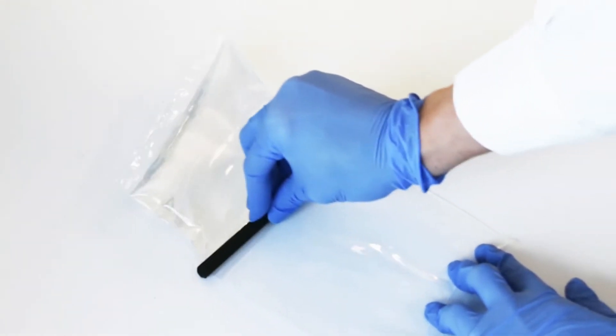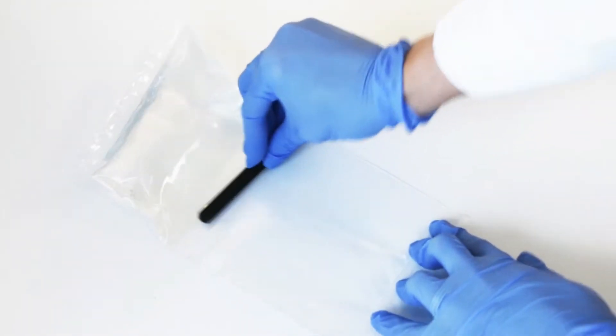Using the removed plastic clip, push all of the Part A into the Part B section and begin mixing by moving the resin around in the bag with your hands.